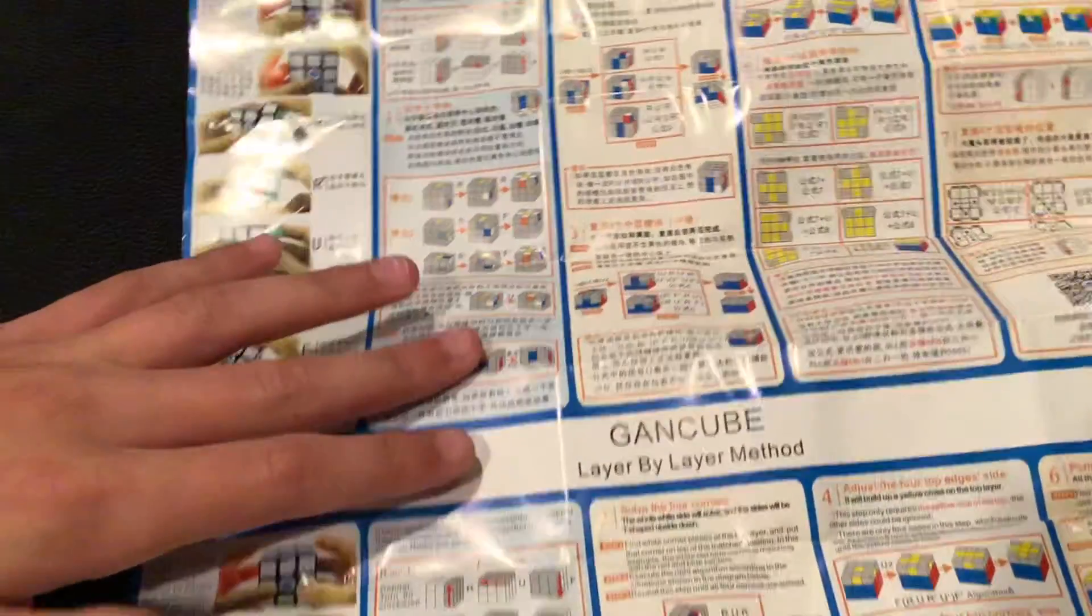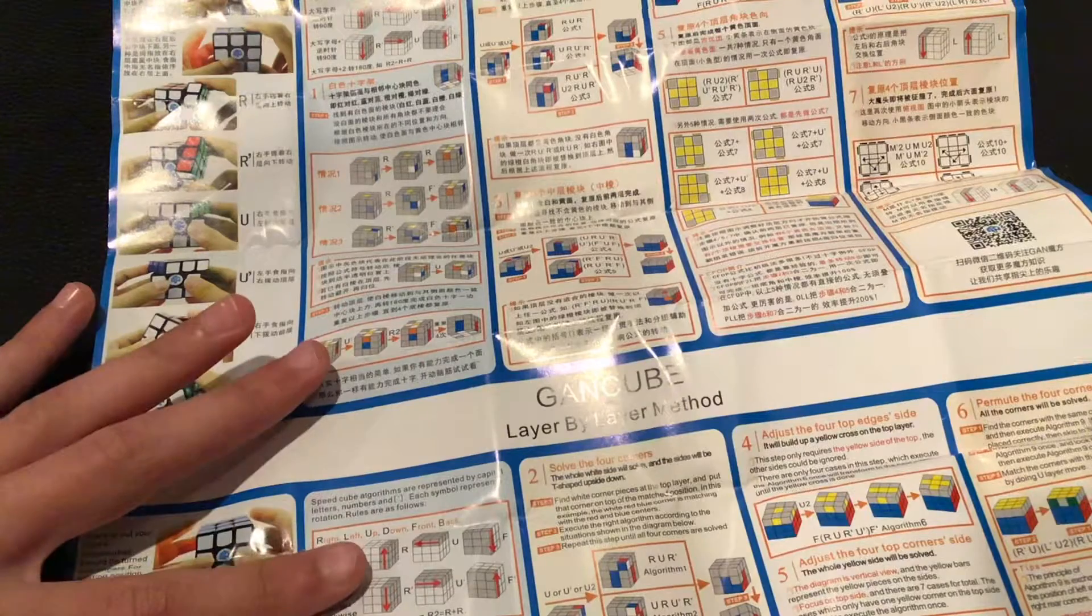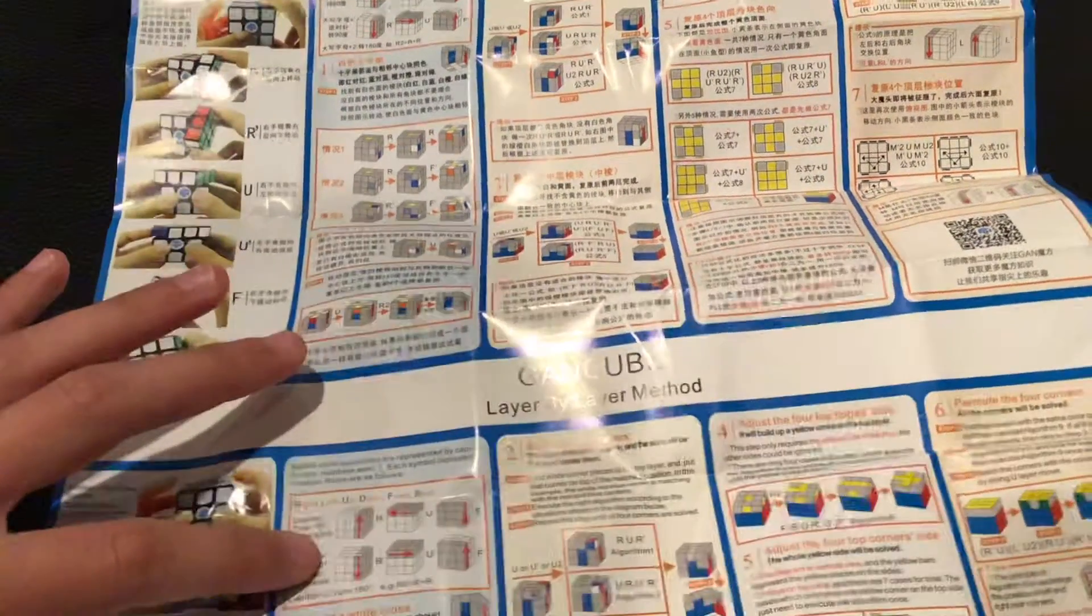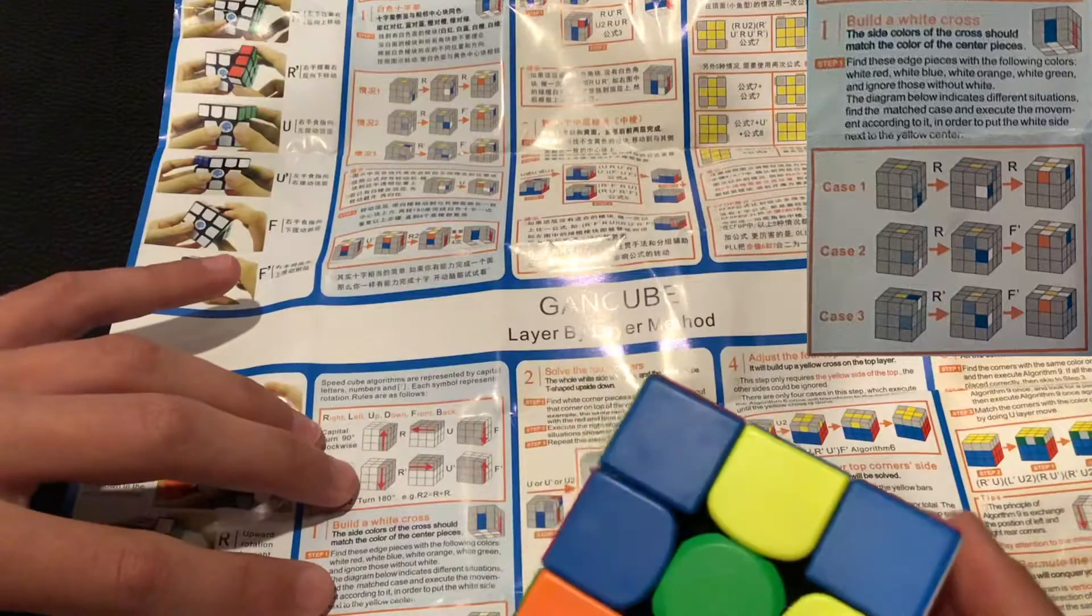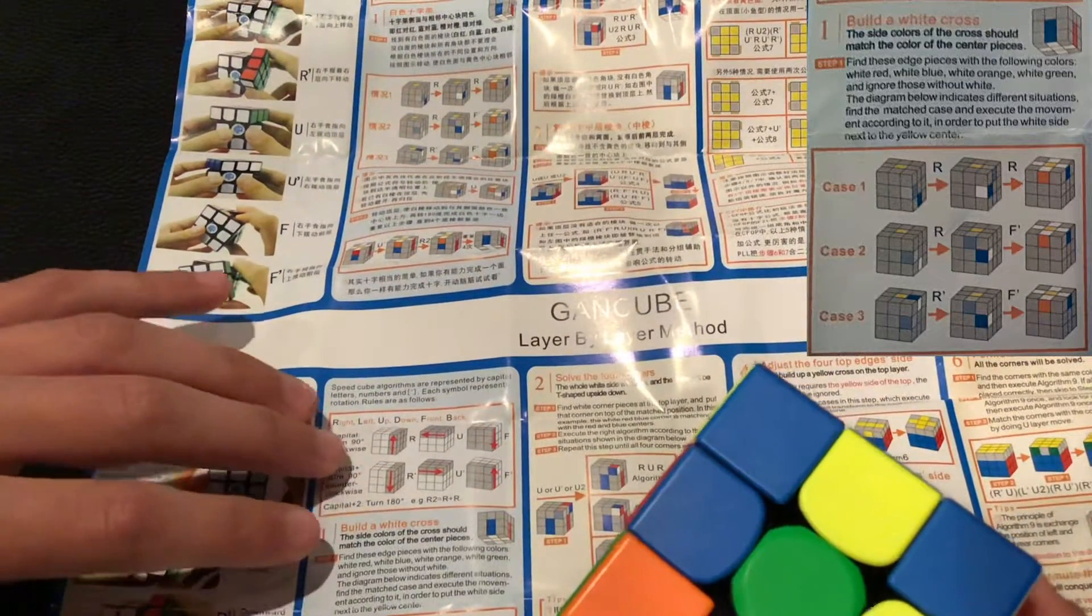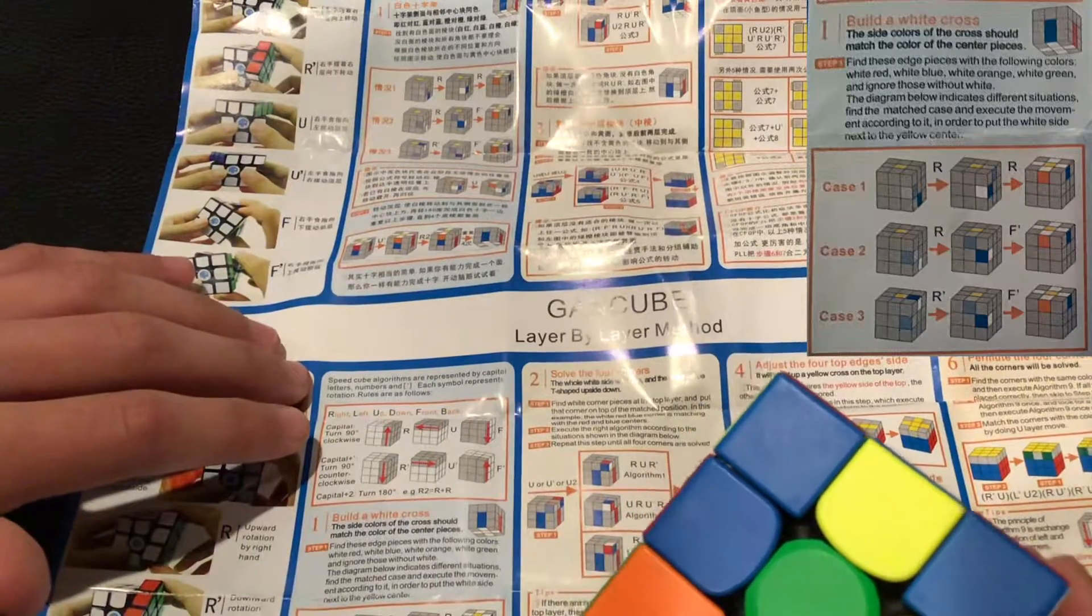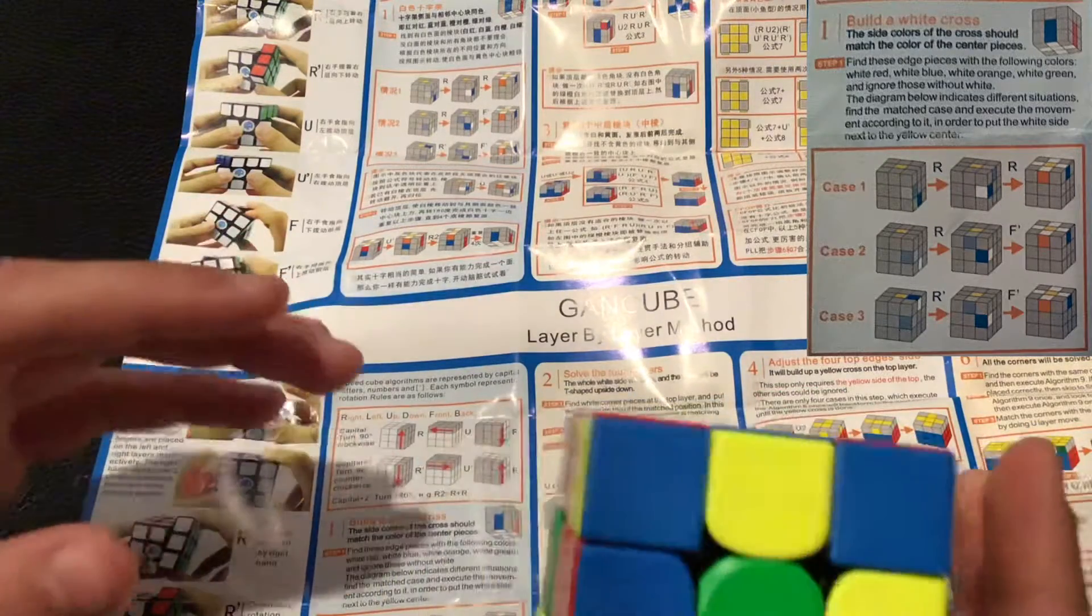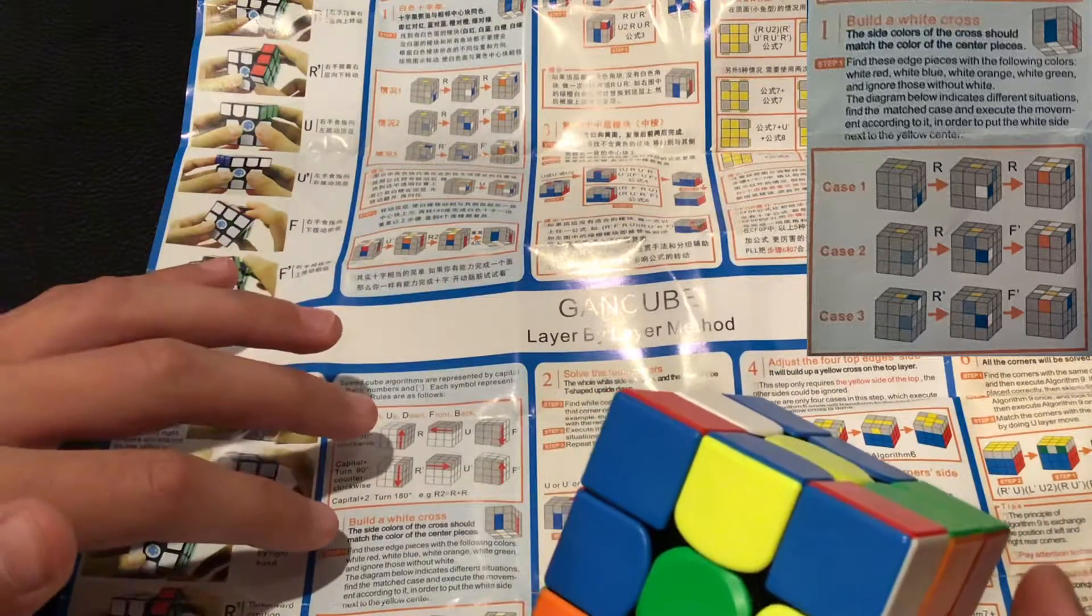Now we need to go here. GAN cube layer by layer method. Speed cube algorithms are represented by capital letters, numbers, and apostrophes. Each symbol represents a rotation. So build a white cross. Find these edge pieces with the following colors: white red, white blue, white orange, white green, and ignore those without white. The diagram below indicates the different situations. So it looks like we're doing the flower method, which is basically how you solve it with a flower on top. And then you just put each of the pieces in individually.